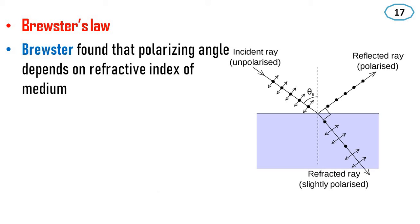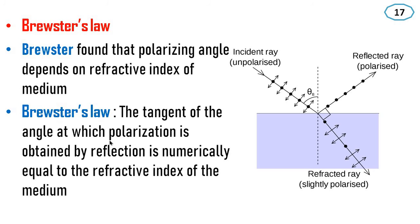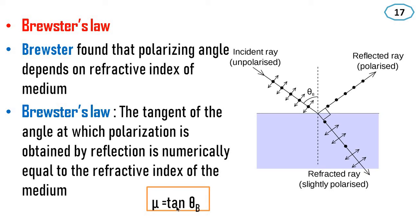Brewster found that the polarizing angle theta b depends on the refractive index of the medium. Brewster's law states that the tangent of the angle at which polarization is obtained by reflection is numerically equal to the refractive index of the medium. That is, mu equal to tan theta b.